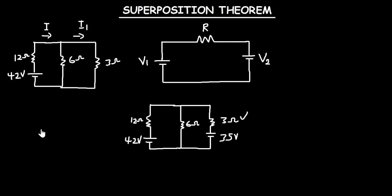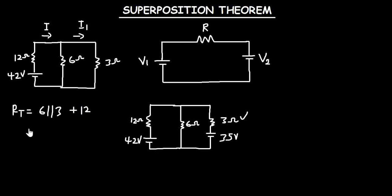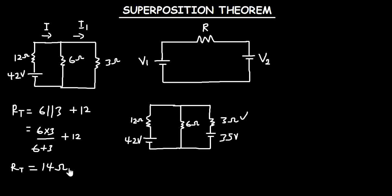To calculate for the total current, you will have to find the equivalent resistance. When you look at these two resistors — the 6 ohms and the 3 ohms — you see that they are in a parallel connection, and then they are in series with the 12 ohms resistor. So the effective resistance will be 6 ohms in parallel with 3 ohms, plus 12 ohms. That is (6×3)/(6+3) + 12, which gives an effective resistance of 14 ohms.